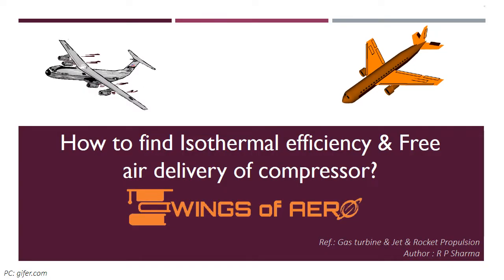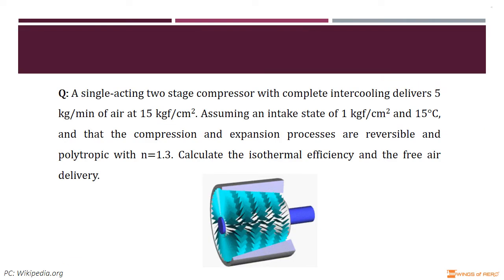Now, we are going to learn how to find the isothermal efficiency and the free air delivery of a compressor. Consider a single-acting two-stage compressor with complete intercooling, which delivers 5 kg per minute of air at 15 kgf/cm², assuming an intake state of 1 kgf/cm² and 15°C, and that the compression and expansion processes are reversible and polytropic with n = 1.3. Calculate the isothermal efficiency and the free air delivery.